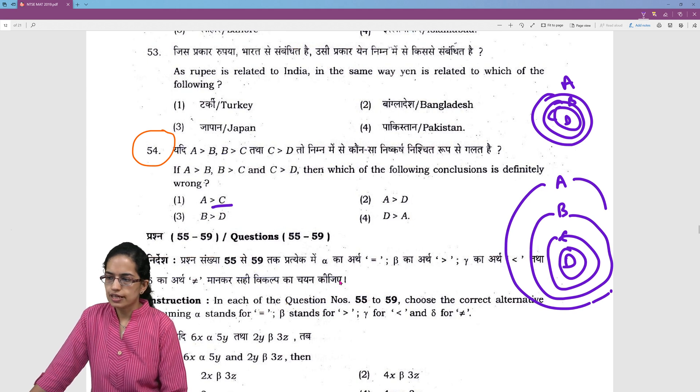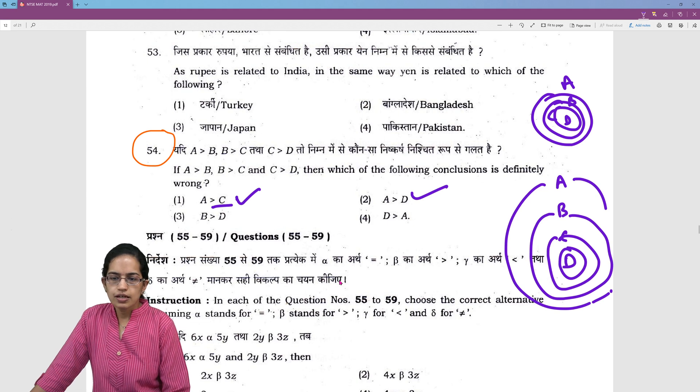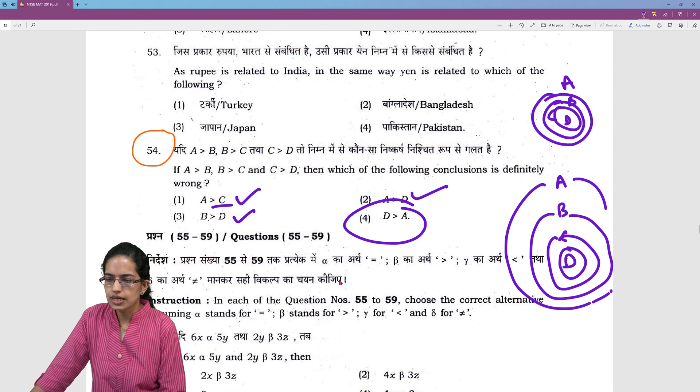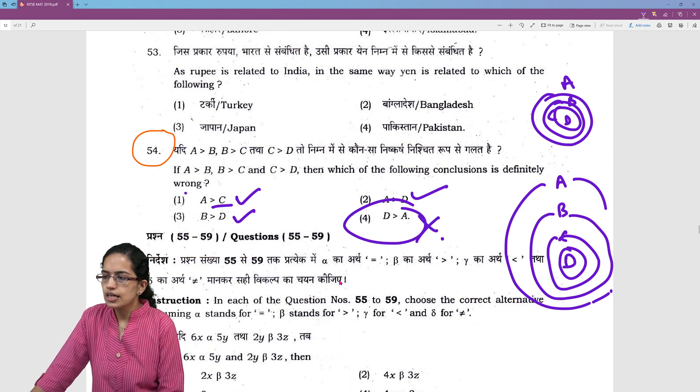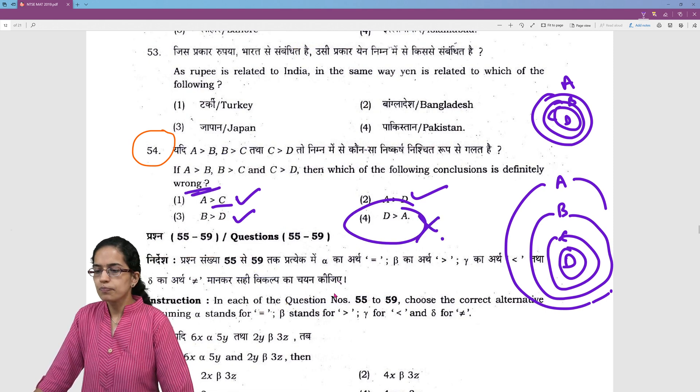Then, A would be bigger than C, definitely correct. A would be bigger than D, definitely correct. B would be bigger than D, definitely correct. But D would be bigger than A is definitely incorrect. And that's the wrong conclusion that would be there.